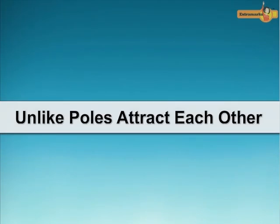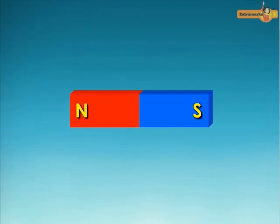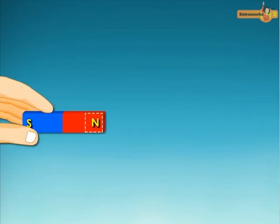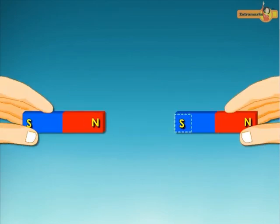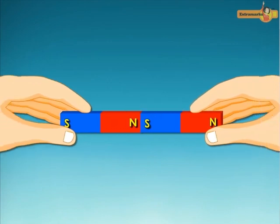Unlike poles attract each other. A magnet has two poles: North Pole and South Pole. If we bring the North Pole of one magnet close to the South Pole of another magnet, then the two poles attract each other.